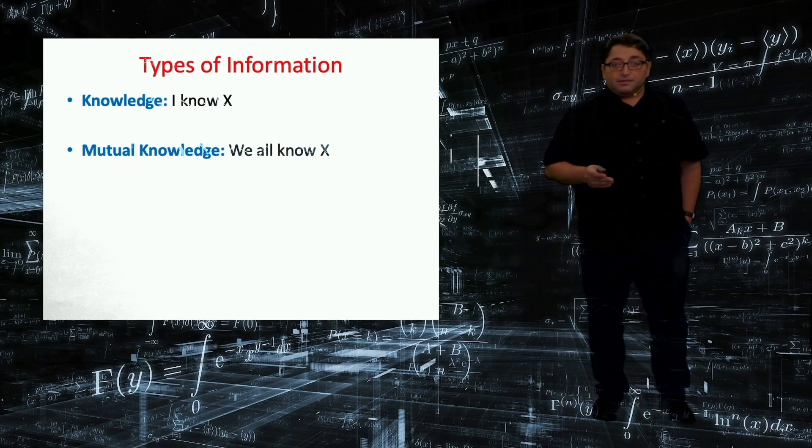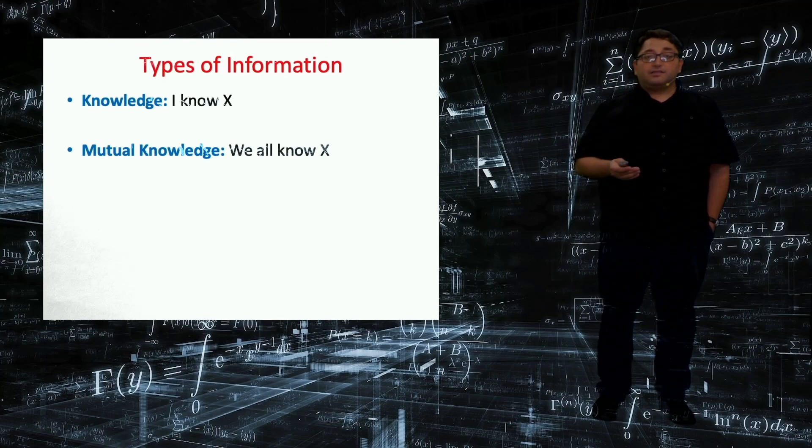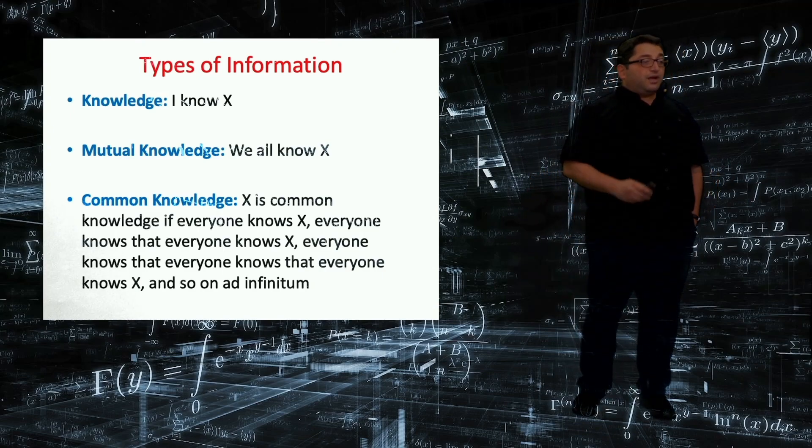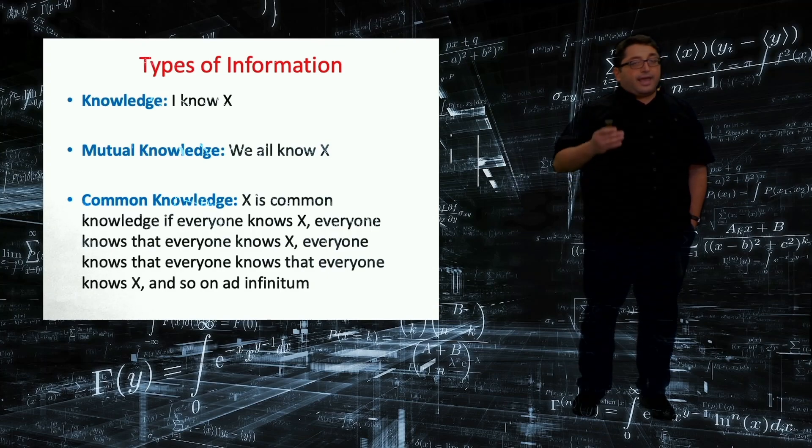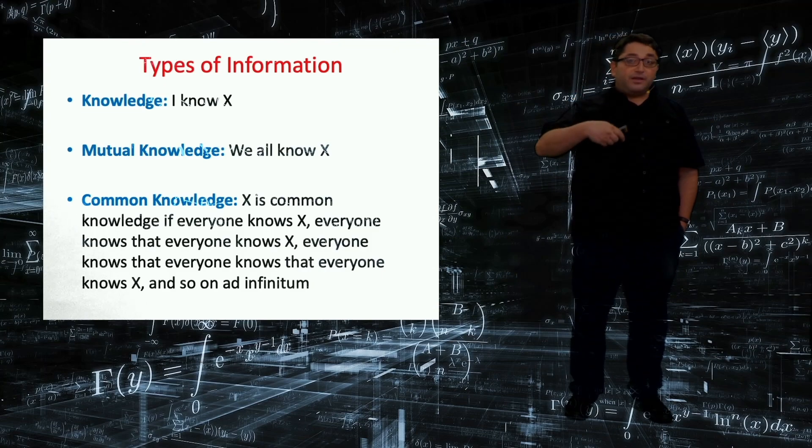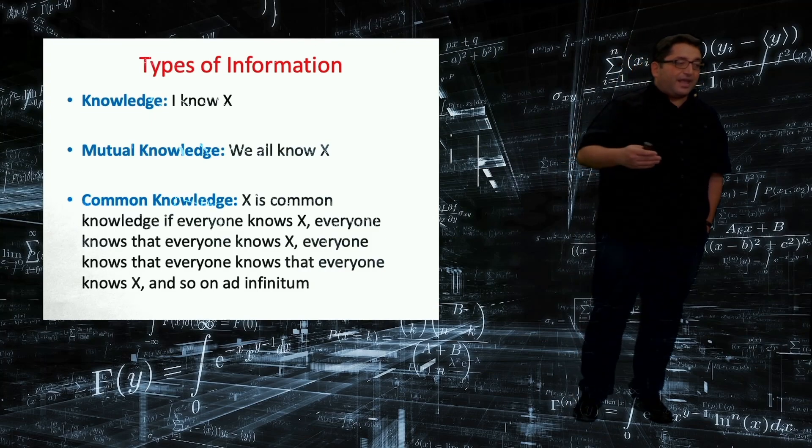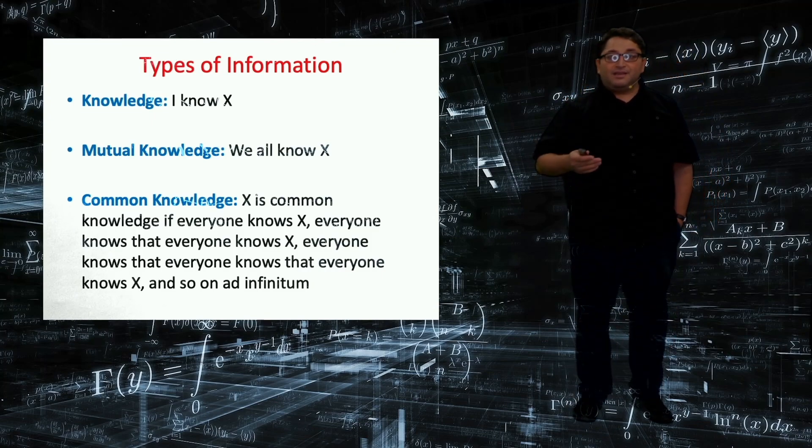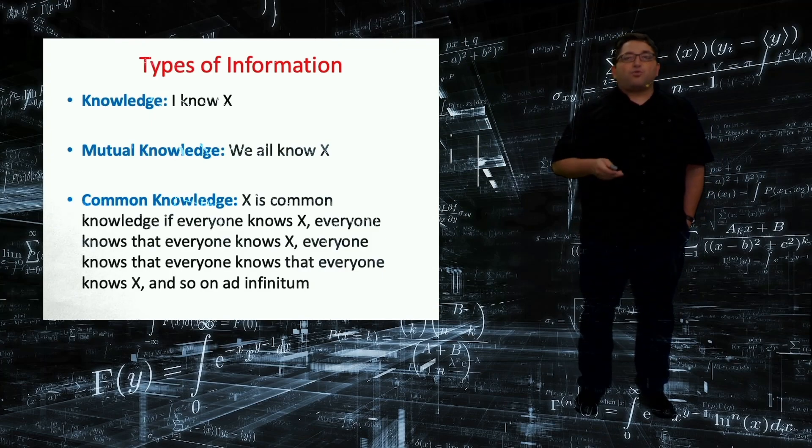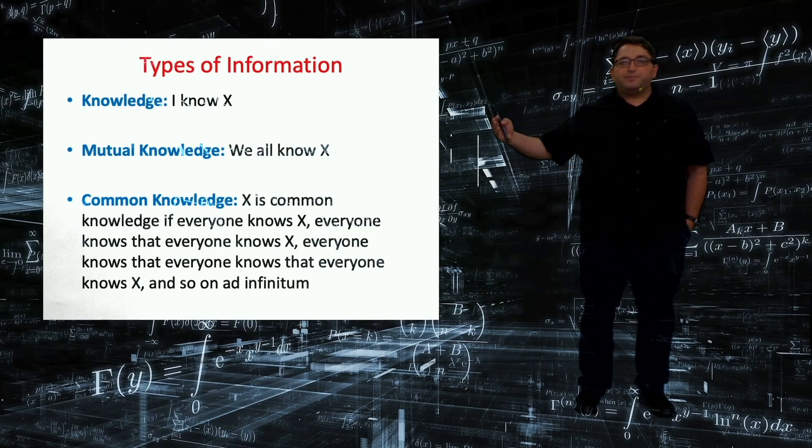And sometimes, in some solution concepts, we need a higher level of knowledge, such as common knowledge. So common knowledge means the following. An information X, say rules of the game, is common knowledge if everybody knows it, and if everybody knows that everyone knows it, and if everyone knows that everyone knows that everyone knows it, until infinite. So this assumption could be quite strong. We have these layers of knowledge which we obtain by iteration.